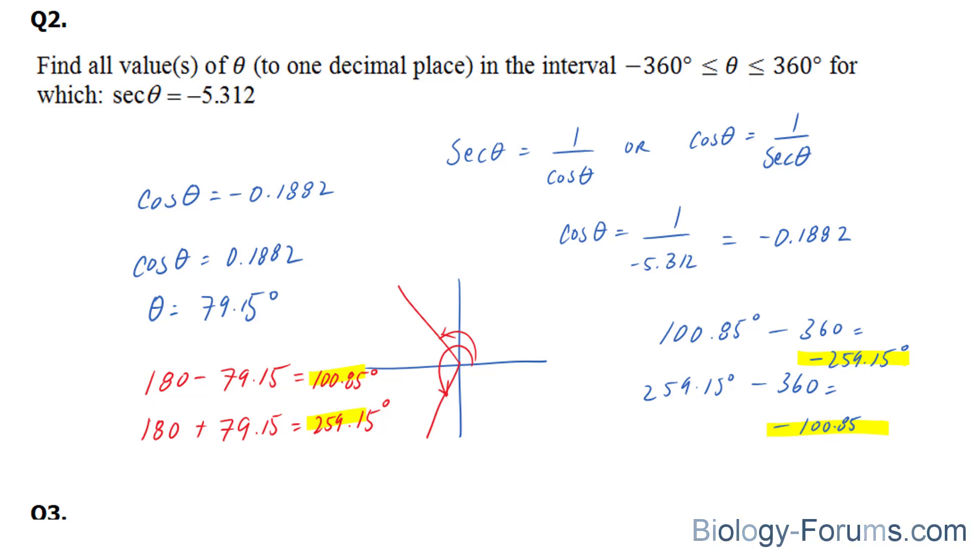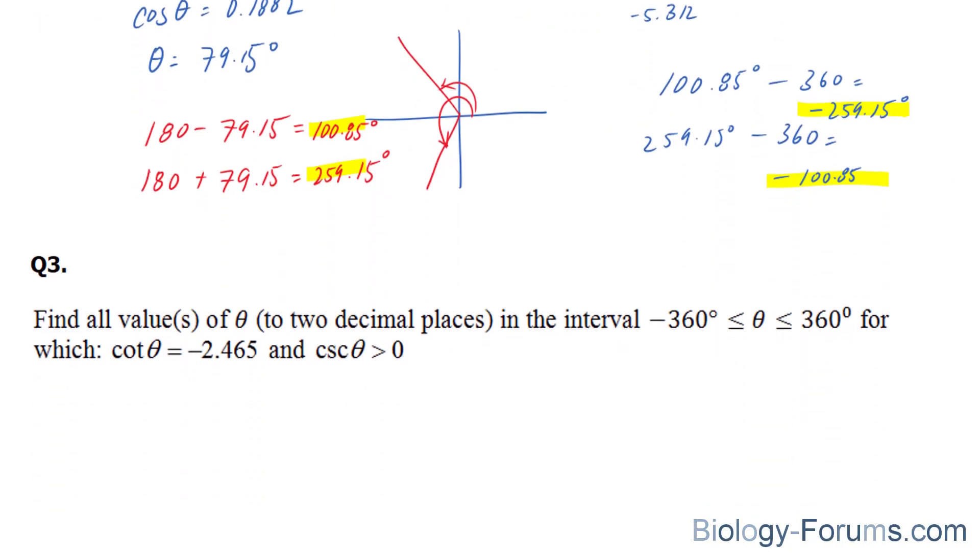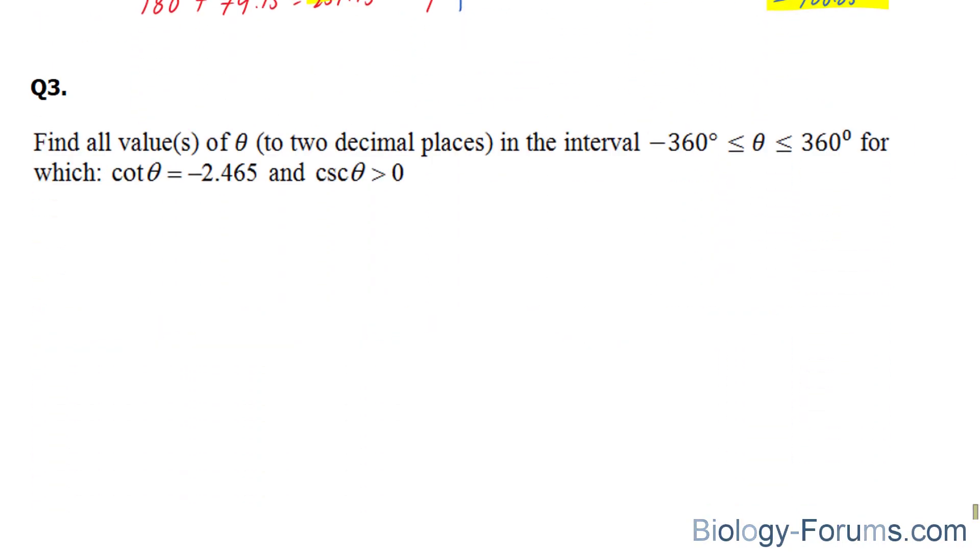Let's move on to question number three. Question three, which is the most challenging one here, asks us to find all values of theta in the interval negative 360 to 360 for which cotangent theta equals negative 2.465 and cosecant is greater than zero.